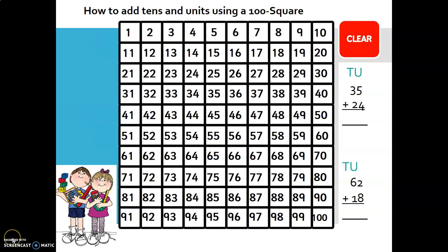How to add 10s and units using a 100 square. I have two equations here. Let's look at the first one: 35 plus 24. So let's go to 35 on our 100 square. And we're adding 24. Now, if we look at 24, we split it into 10s and units. So there are 2 tens and 4 units.